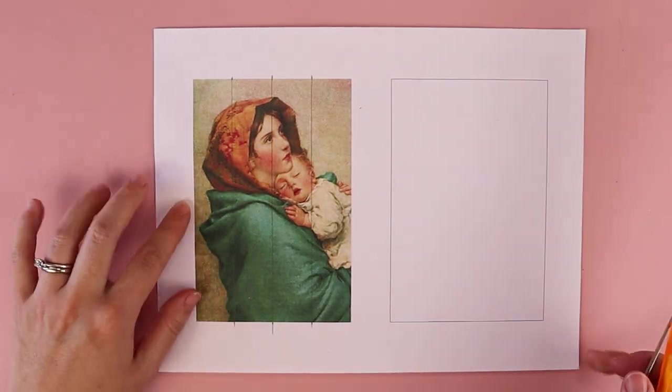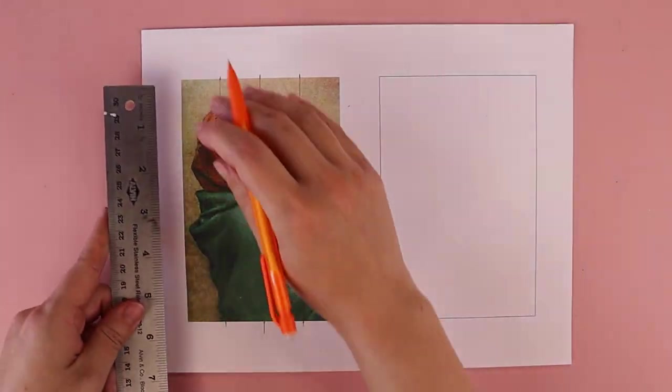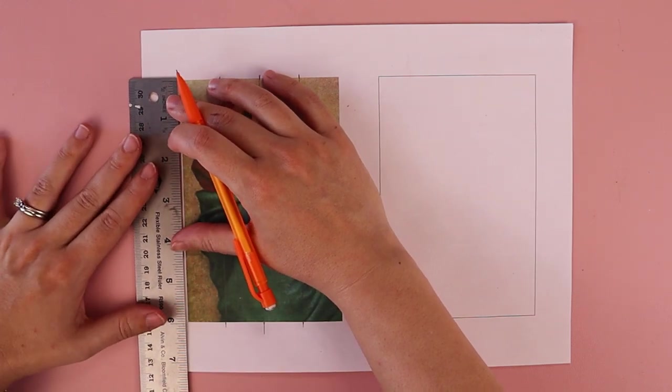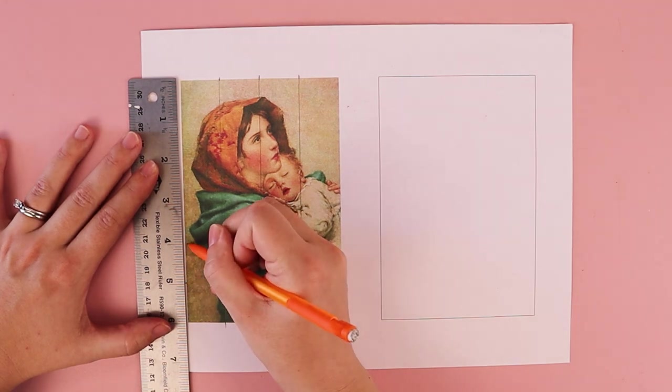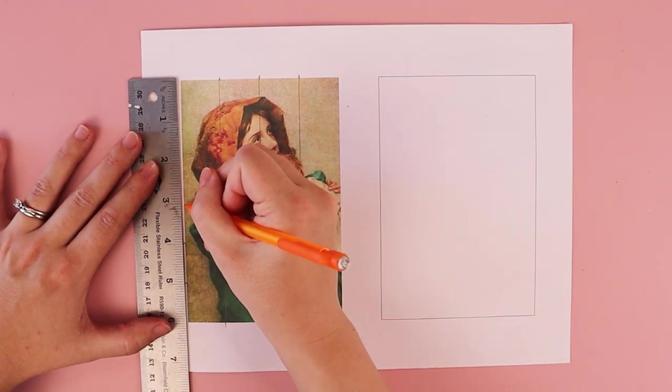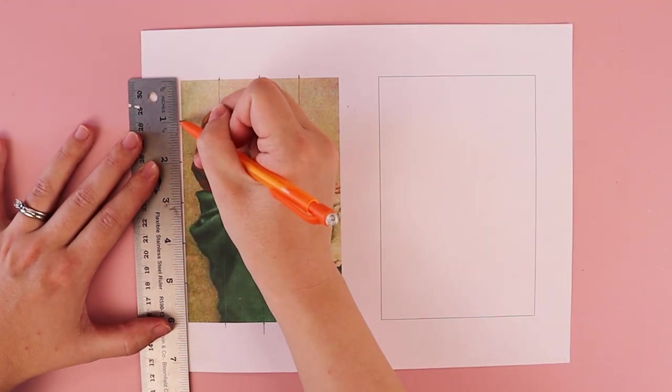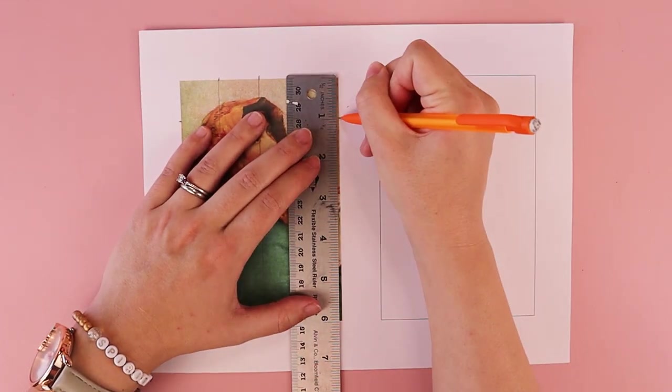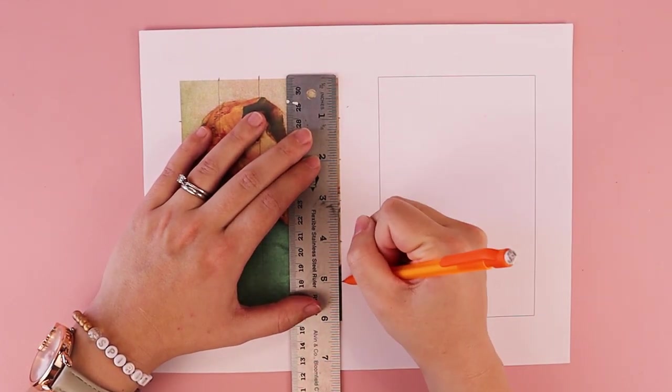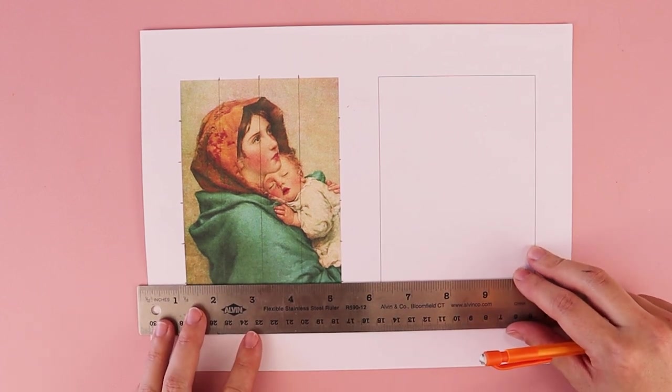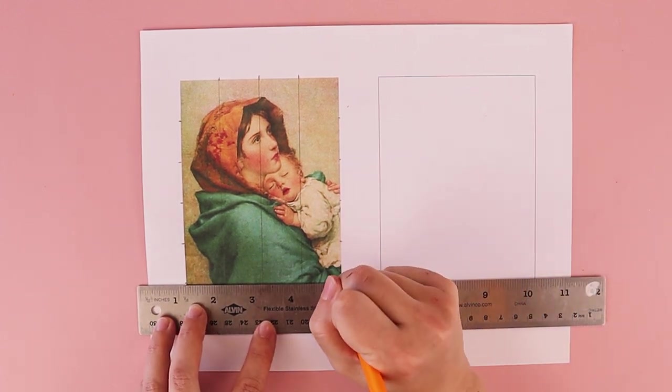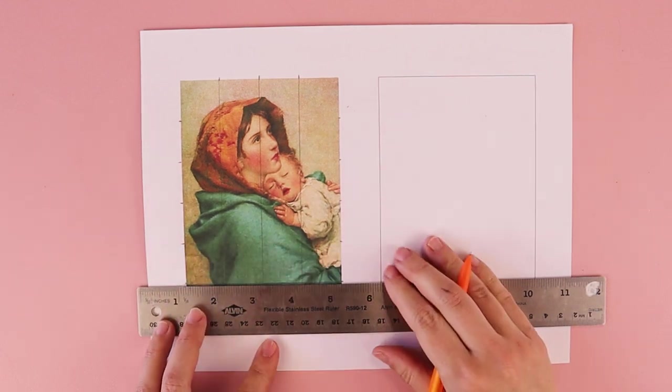And I'm going to do the same on the opposite side. So I'm going to take my ruler. I'm going to line it up against my reference picture. It's six inches tall. And I'm going to place a mark on every inch. I'm going to connect those marks as well. And these are creating the horizontal lines of our grid.